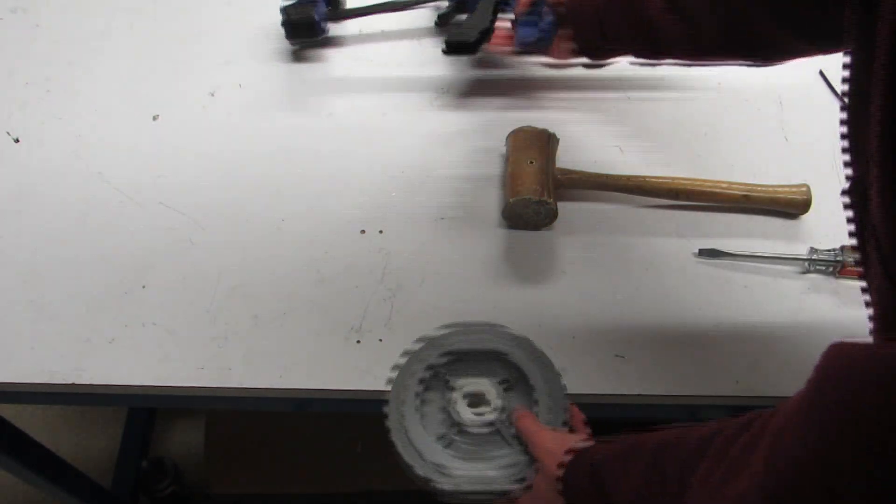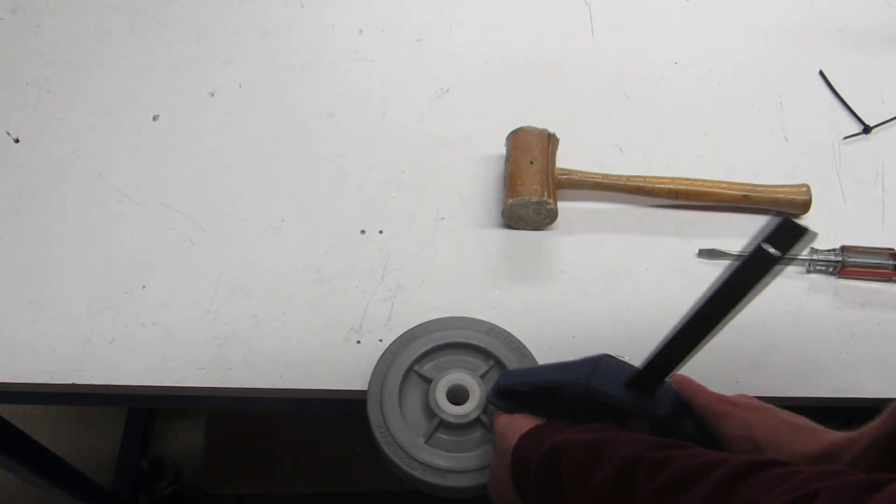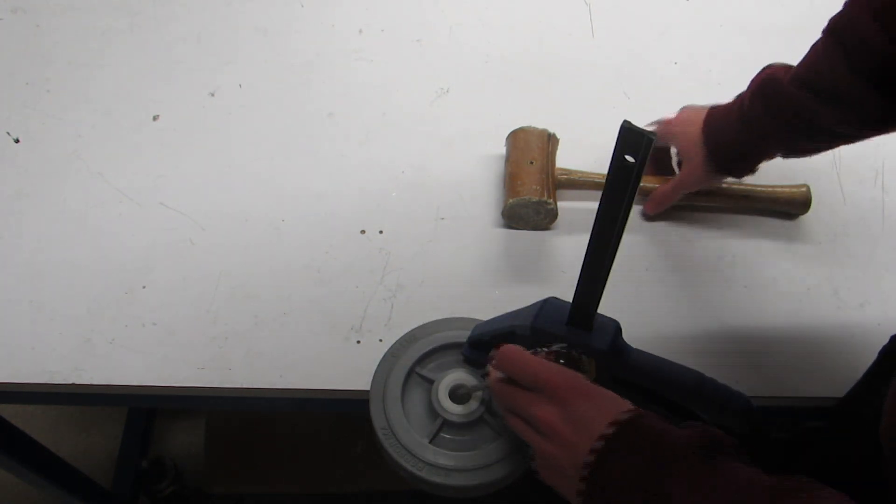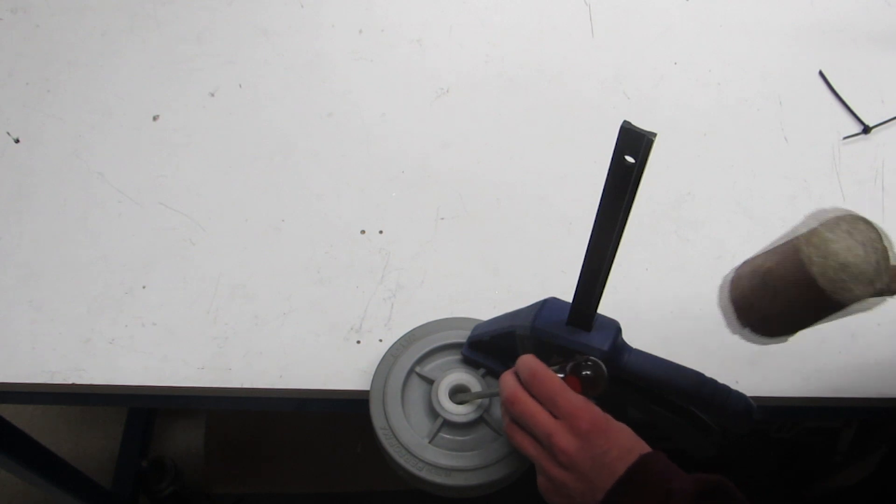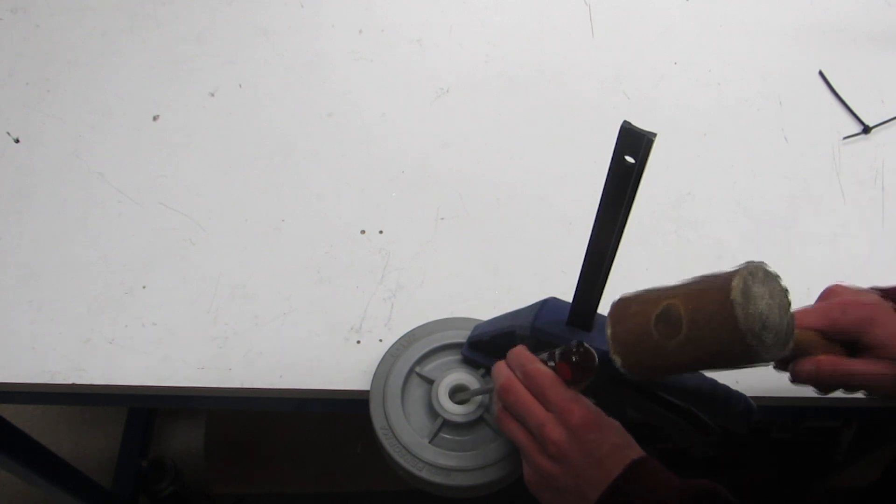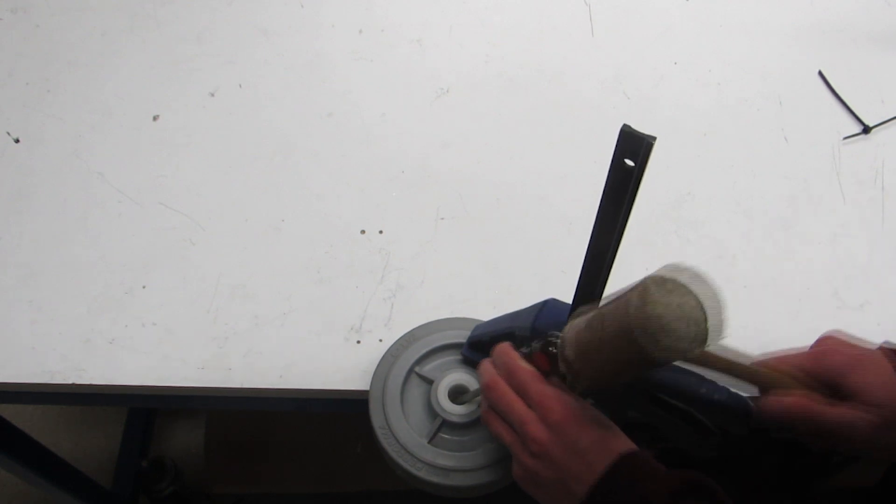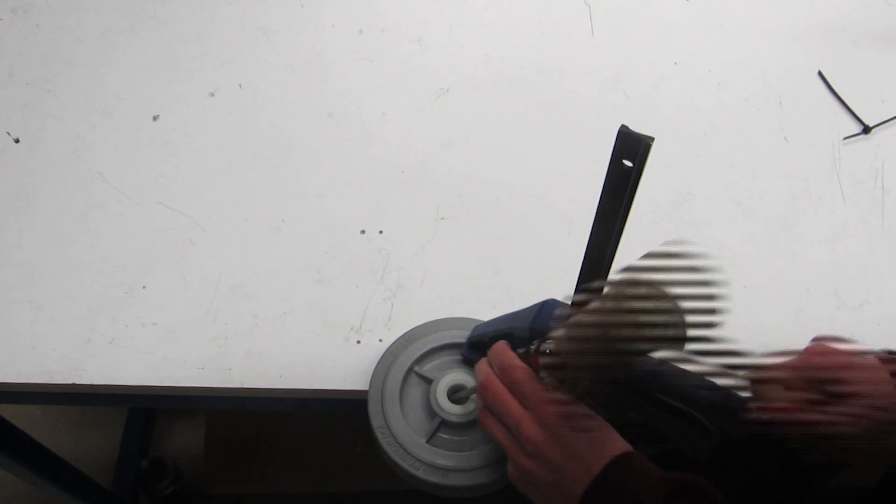So to start this, what I like to do is clamp the wheel to the table to keep it from moving around. Take the flathead, stick it on the lip on the inside of the wheel, and gently tap out the piece of plastic. There we go.